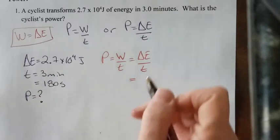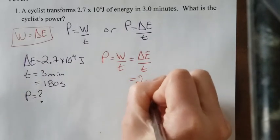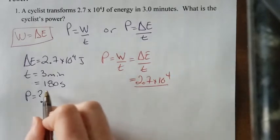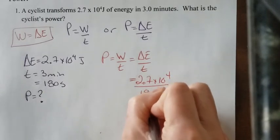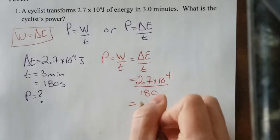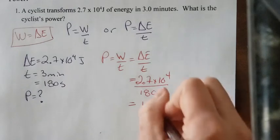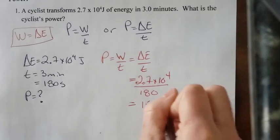In this case here, 2.7 times 10 to the 4, divide by your time, which is 180. And you should get 150. Power is measured in watts. Thank you.